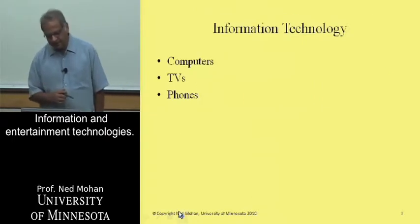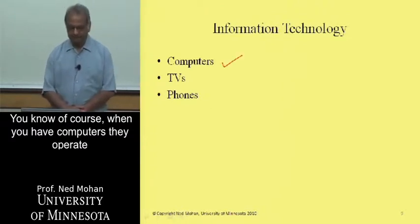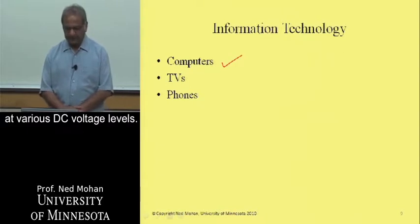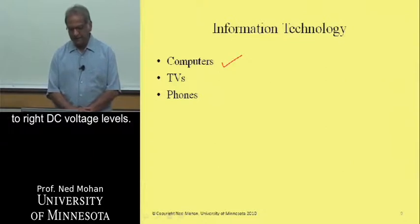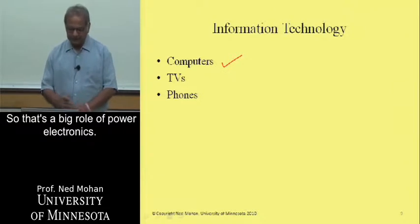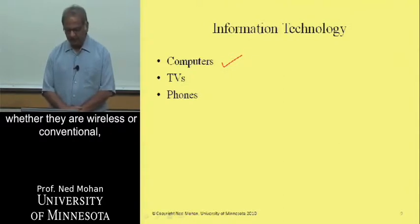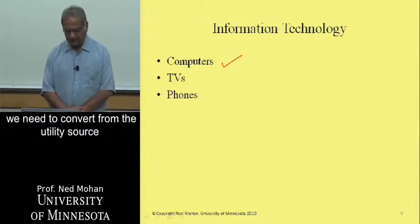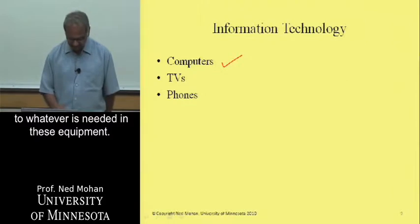In information and entertainment technologies, computers operate at various DC voltage levels, so the incoming voltage from the utility has to be converted to the right DC voltage levels — that's a big role of power electronics. Similarly, in television sets and phones, whether wireless or conventional, we need to convert from the utility source to whatever is needed in that equipment.